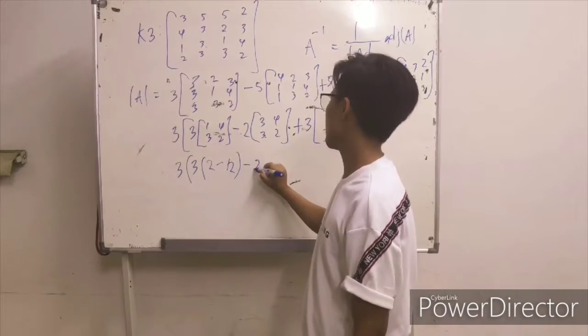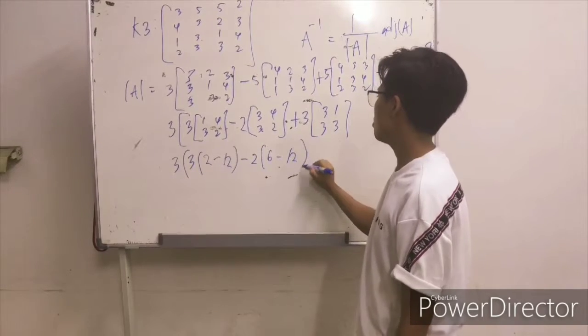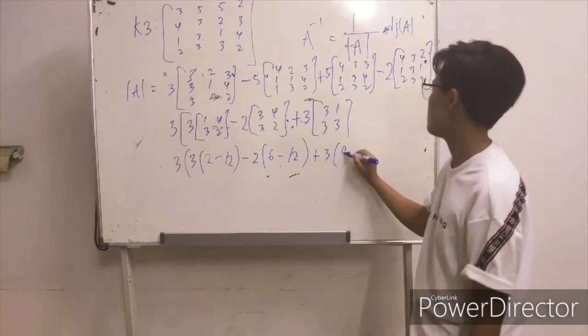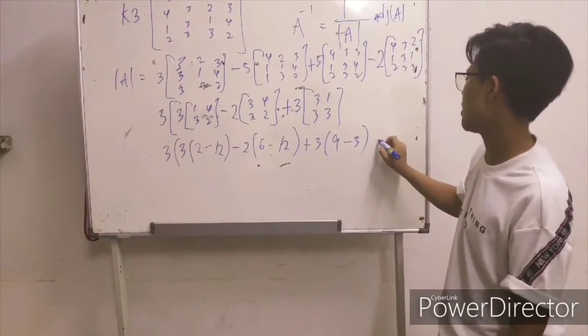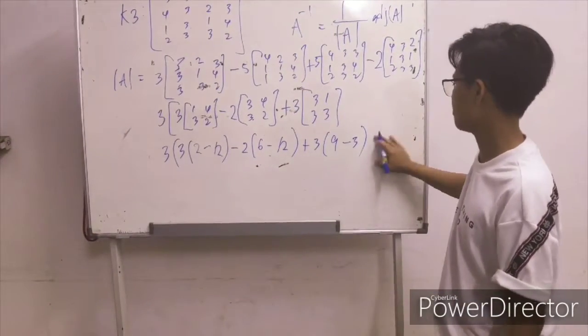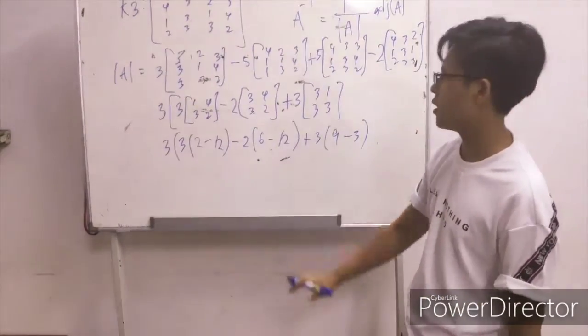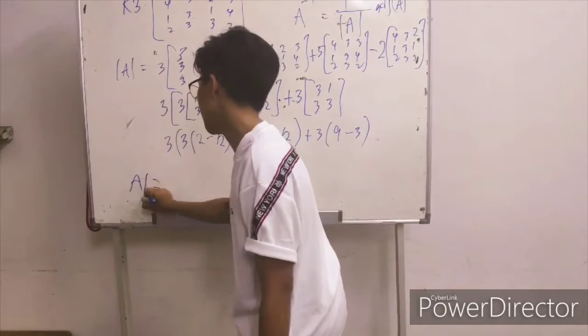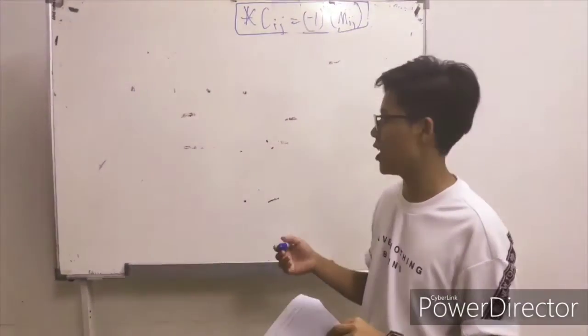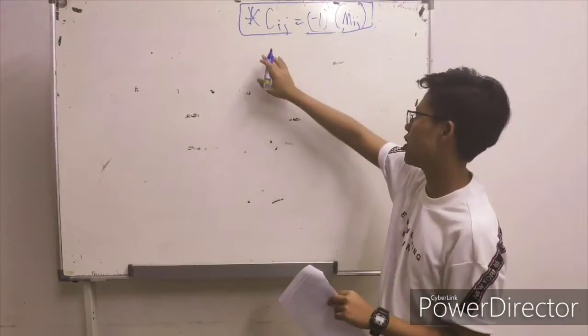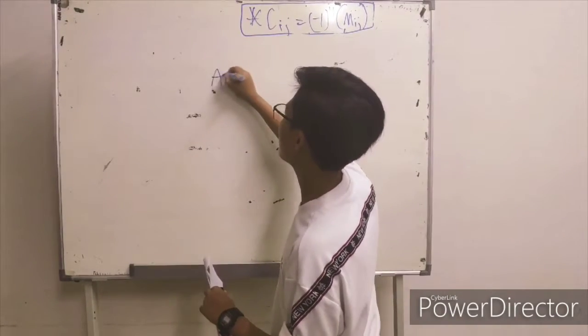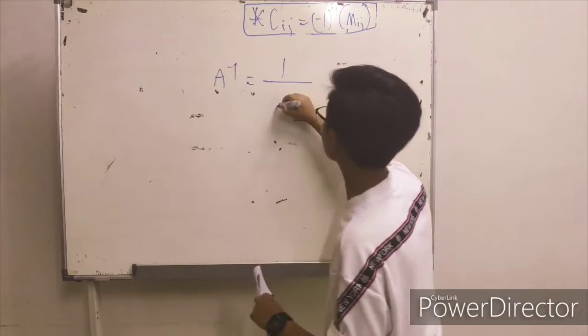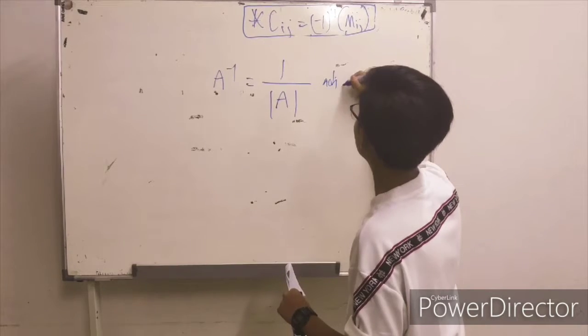So, 6 minus 12, then 9 minus 3, and so on. From this we will get the determinant. So when we have done all this we will get the cofactor matrix. We will use the cofactor matrix and then after we get the cofactor we can use it to find the adjoint.